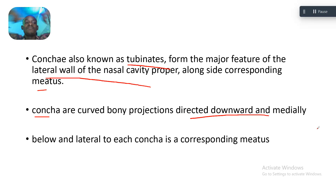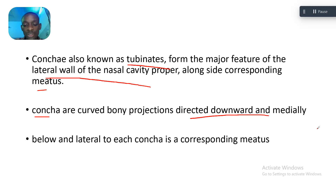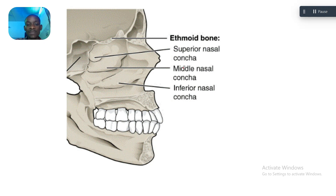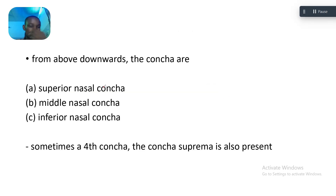They are directed downward and medially. Below and lateral to each concha is a corresponding meatus. The three conchae are: the superior nasal concha, the middle nasal concha, and the inferior nasal concha.